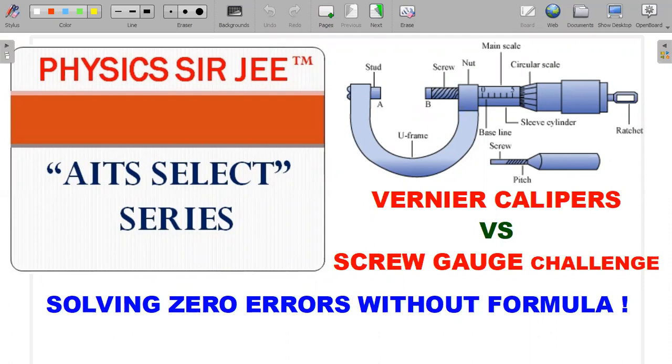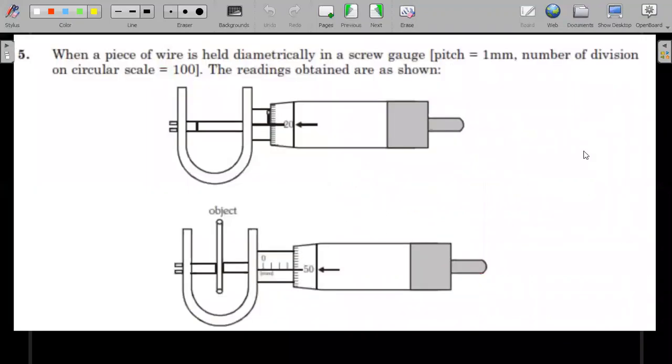As a bonanza, I have chosen a question from the previous AITS LN test series and it contains both Vernier Calipers and screw gauge. It's a combination question where zero errors are present and we'll look at how you could attempt this particular question as quickly as possible without knowing the formula. It's more about the basic concept rather than mugging up a formula.